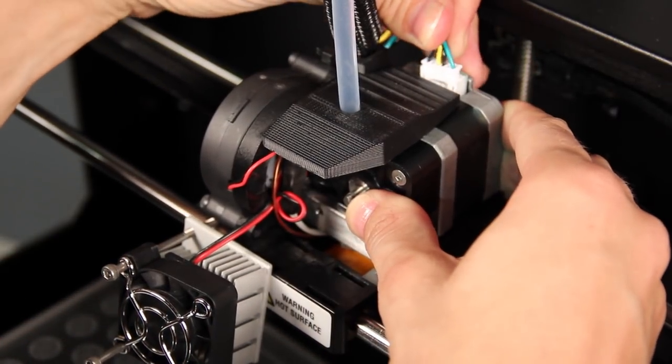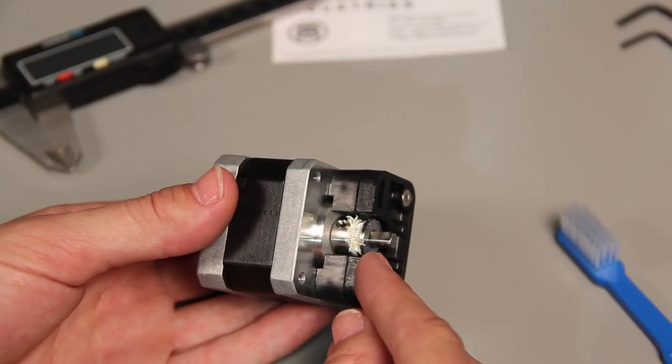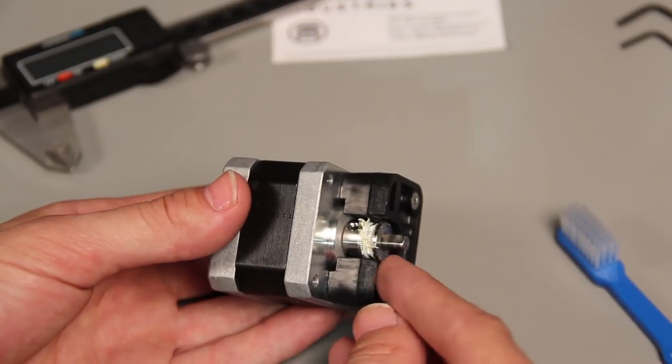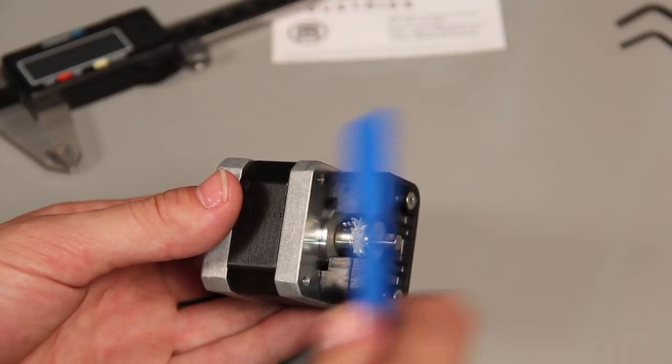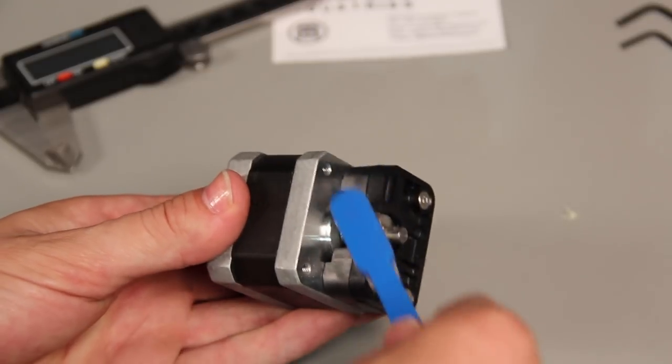Now just disconnect the motor cable here and pull the stepper motor out to the side like this. This right here is the drive gear and it's covered in tiny bits of filament. Take a small brush and brush away the filament bits. Once it's clean,